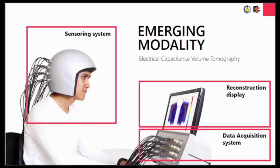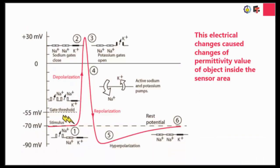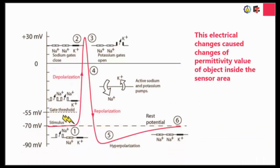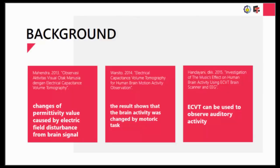ECVT was developed by Dr. Warsito. At first, it was used to detect brain cancer. Some research shows that ECVT can be used to observe brain activity. The principle is that ECVT uses a capacitance principle — sensors are placed around the helmet and connected to the data acquisition system. When the brain receives a stimulation, the electrical potential changes, causing a change in the permittivity value of the object inside the sensor area inside the helmet.